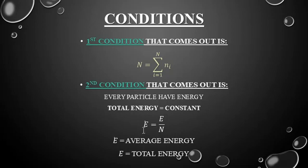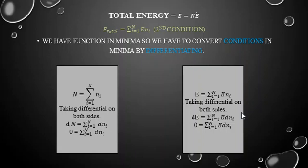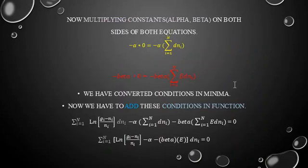The average energy per particle is ε (e-dot) and the total energy E = N·ε. Taking differentials of both conditions: d(N) = Σdnᵢ = 0 and d(E) = Σεᵢdnᵢ = 0. We will use these two conditions in our formula. Multiplying the first condition by constant α and the second by constant β, both equal zero on the left-hand side.